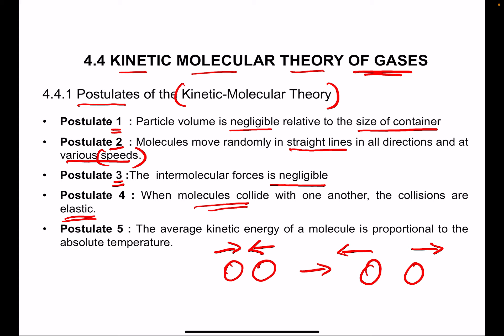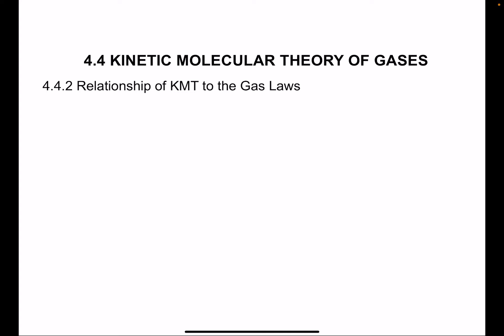The fifth and last postulate to remember: the average kinetic energy of the molecules is directly proportional to the absolute temperature. This is very basic chemistry — the higher the kinetic energy, the more it is related with temperature. So we can interrelate between temperature and the movement of the particles, or kinetic energy. It is always directly proportional.